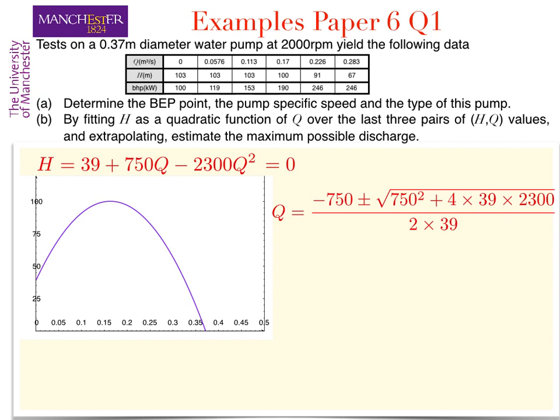Which here gives us Q is minus 750 plus or minus the square root of 750 squared plus 4 times 39 times 2300 all divided by 2 times 39, giving us the two solutions of 0.37 or minus 0.046 cubic meters per second.